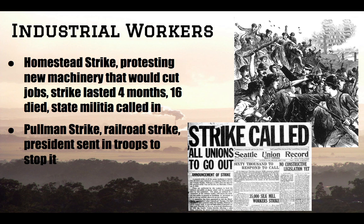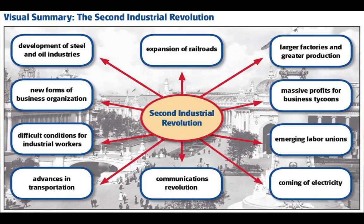Another major strike is the Pullman Strike, related to the railroads. Workers were striking because many had been laid off and those still working were getting paid even less money. The president actually sent troops in to stop this specific strike. There are actually a lot of strikes to talk about — they're really interesting with a lot of details, and you might wonder how the police were just allowed to show up and threaten or harm strikers. It's interesting why that was allowed to happen, but it did.